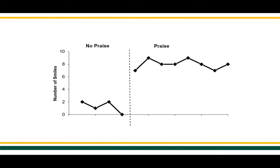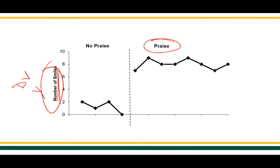In this graph, on the y-axis, this is typically the dependent variable — the behavior that we were interested in measuring. In this case we're talking about the number of smiles. In the conditions reported here, you sometimes won't be able to tell which one is baseline and which one is treatment.